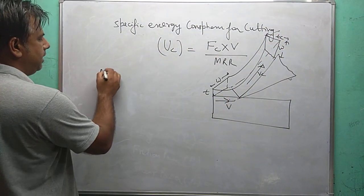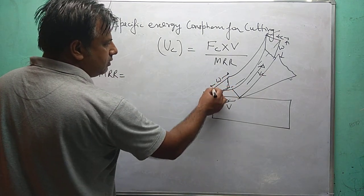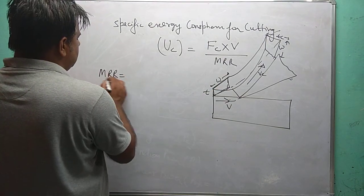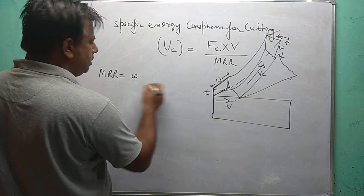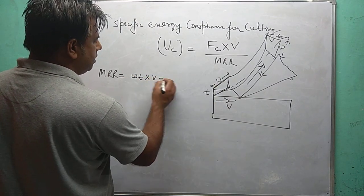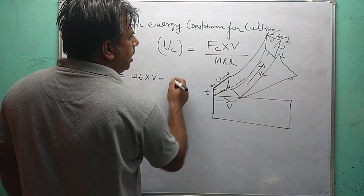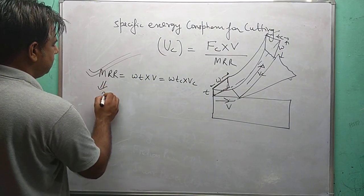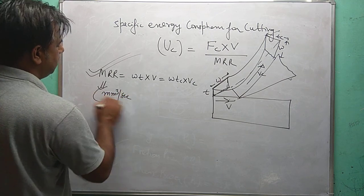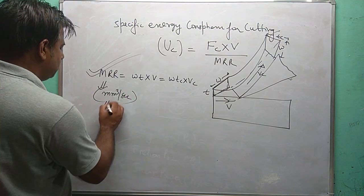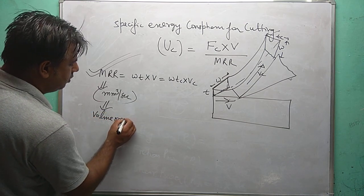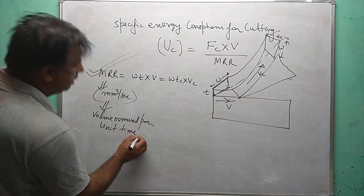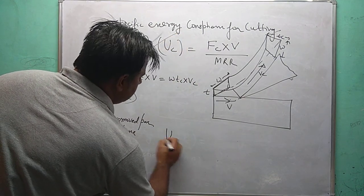Material removal rate is the volume per unit time — mass flow rate rho into velocity. So material removed per unit time is W into T into V, where W×T is the cross-sectional area and V is the velocity. Outgoing volume is W into Tc into Vc. Its unit is mm³ per second — volume removed per unit time.